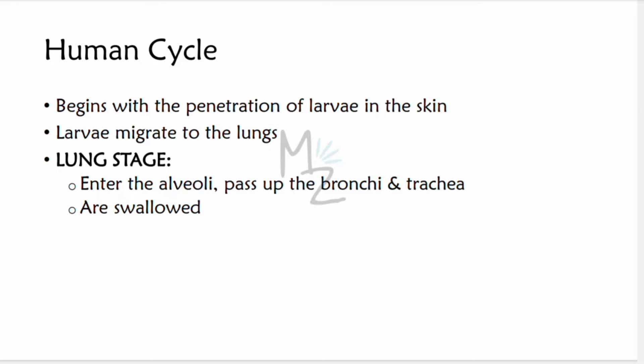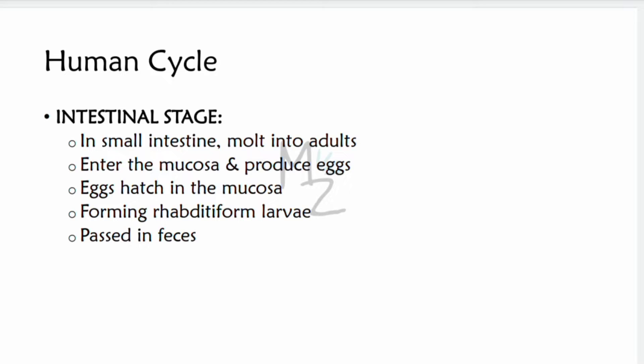The life cycle in the human body begins with penetration of the skin, usually the feet, by the infectious filariform larvae, and their migration to the lungs — here the lung stage starts. They enter the alveoli, pass up the bronchia and trachea, and are then swallowed, entering the GI tract where the intestinal cycle starts. In the small intestine, the larvae molt into adults that enter the mucosa and produce eggs. The eggs usually hatch within the mucosa, forming rhabditiform larvae that are passed in feces.